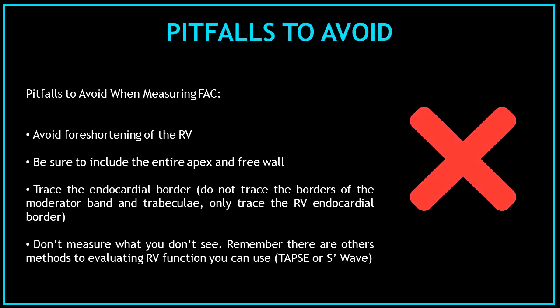Pitfalls to avoid when measuring fractional area change: Avoid foreshortening of the right ventricle. Be sure to include the entire apex and free wall. Trace the endocardial border — do not trace the borders of the moderator band and trabeculations. Only trace the right ventricular endocardial border. And most importantly, don't measure what you don't see. Remember, there are other methods to evaluate right ventricular function you can use, like TAPSE or S-wave.